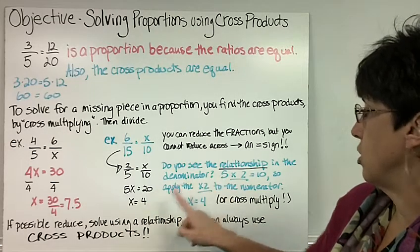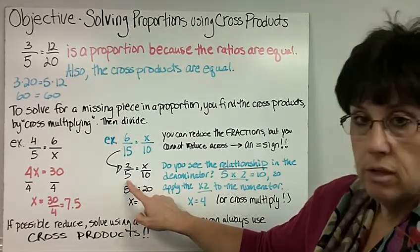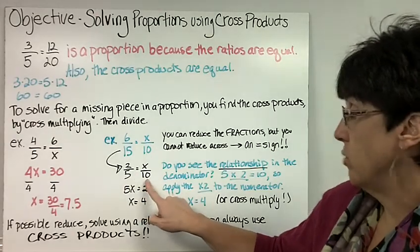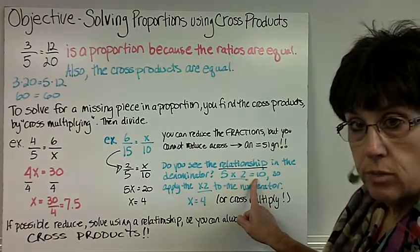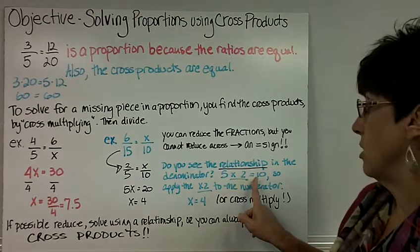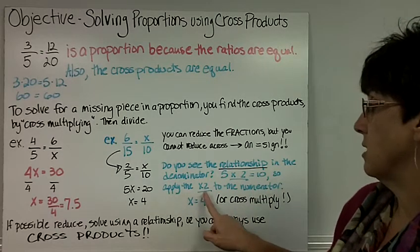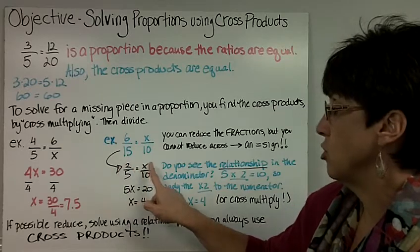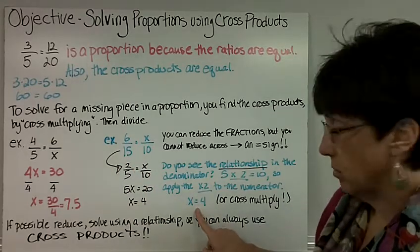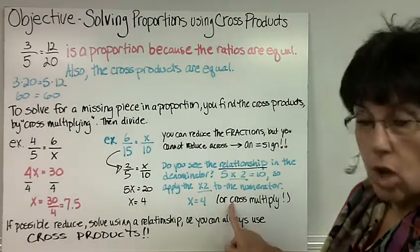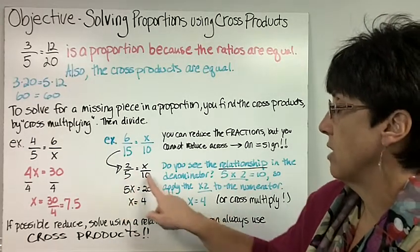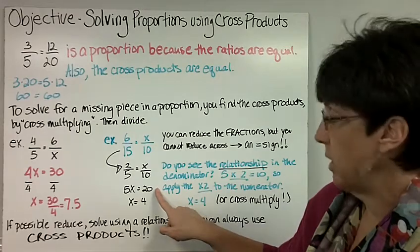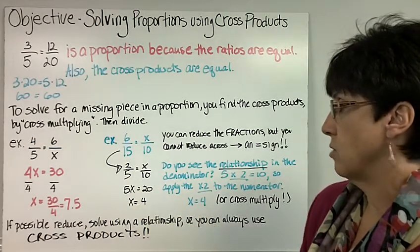So first, do you see the relationship in the denominator? 5 times 2 is 10. So because there is a relationship in the denominator, you can use that same relationship in the numerator. So you can apply the times 2 to the numerator. So 2 times 2 is 4. Or you can always cross multiply, in which we would say 5 times x is 5x. 2 times 10 is 20. Divide by 5, x equals 4.